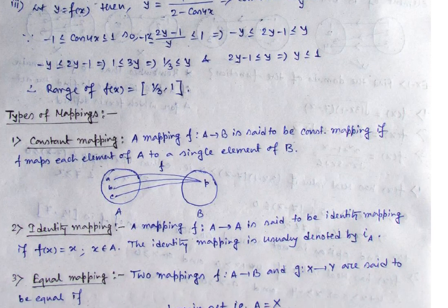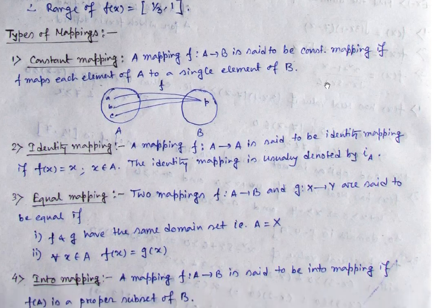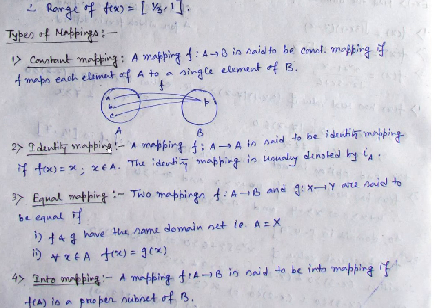Ab chale aate hain types of mapping — yeh cheez hum log ko achhe se samajhna hai. There are so many types of mapping. When many elements of A map to a single particular element in B, that type of mapping is known as a constant mapping. As I clearly said in the definition: many-to-one is possible but one-to-many is not possible.